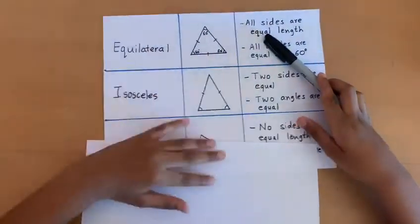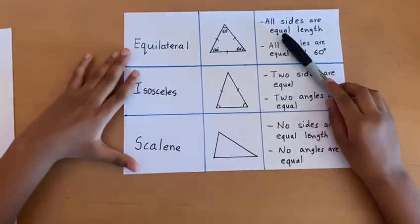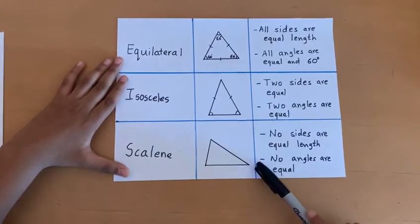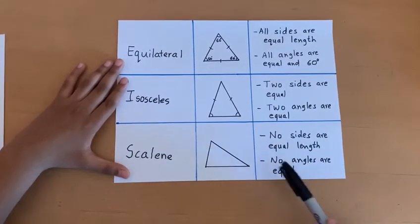Our third type of triangle is the scalene triangle. No sides are equal length with the scalene triangle and no angles are equal either.